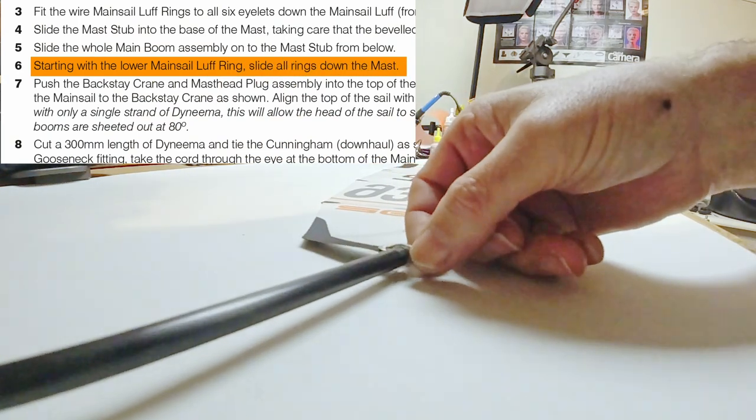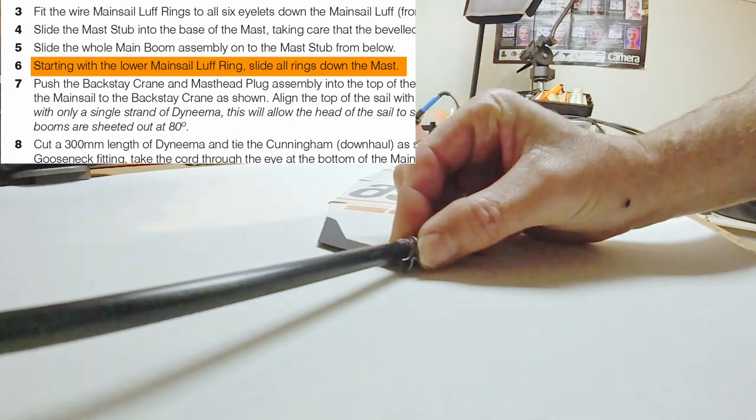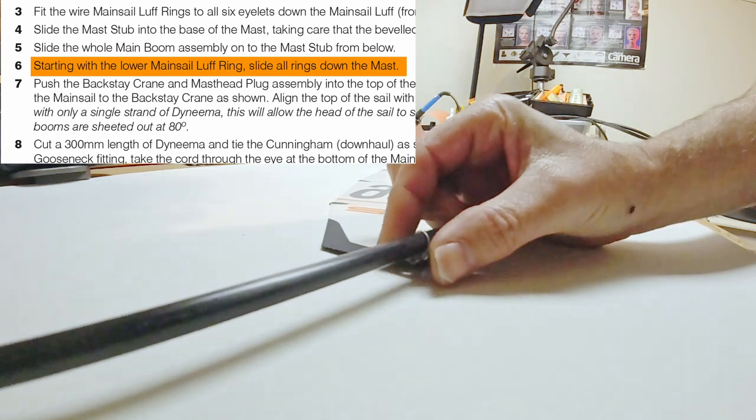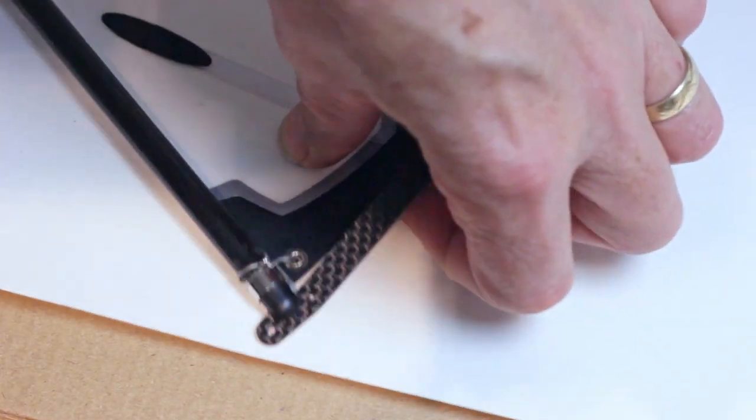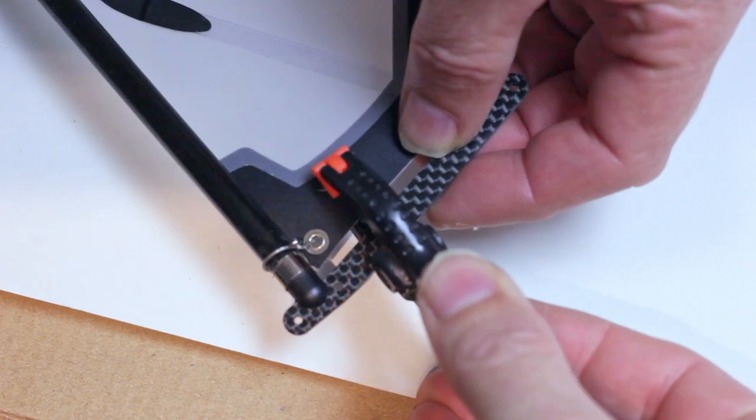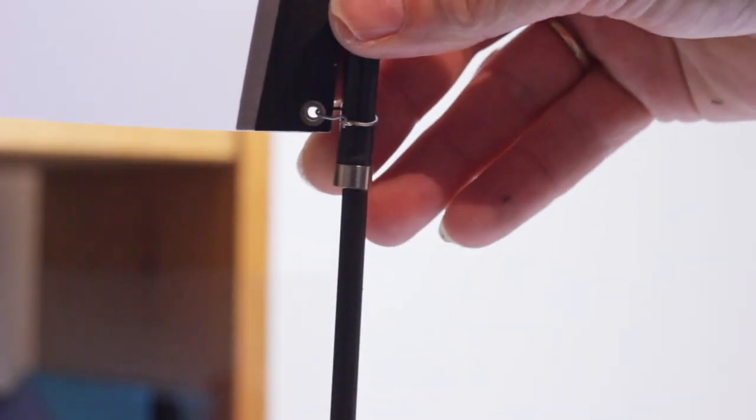Slide the tip of the mast up through the six luff rings. You may have to open the luff rings to do this. Clamp the sail to the masthead crane. Slide the bottom of the mast onto the mast stub.